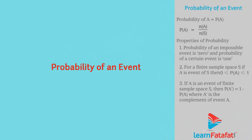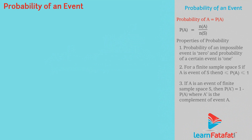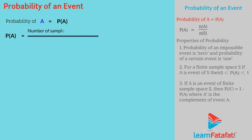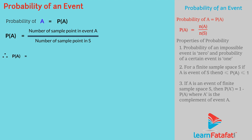Probability of an event. The probability of an event A is represented as probability of A, and it is defined as the ratio of number of sample points in event A to the number of sample points in sample space S. Probability of A is equal to number of sample points in event A upon number of sample points in S. Therefore, probability of A is equal to n(A) upon n(S).